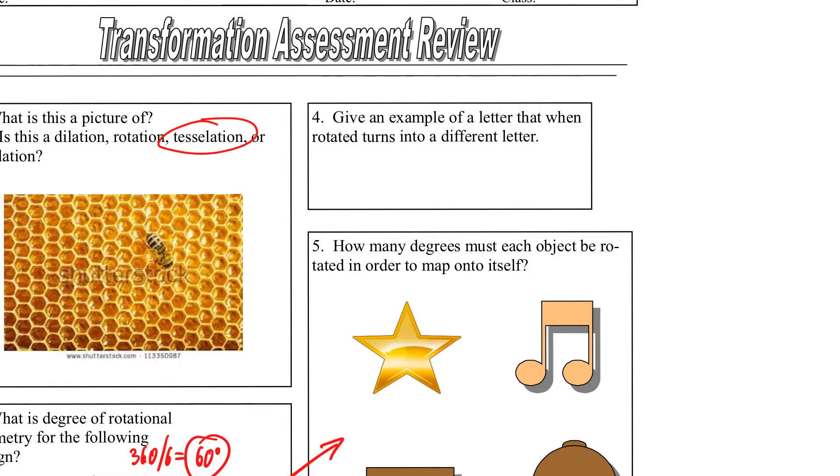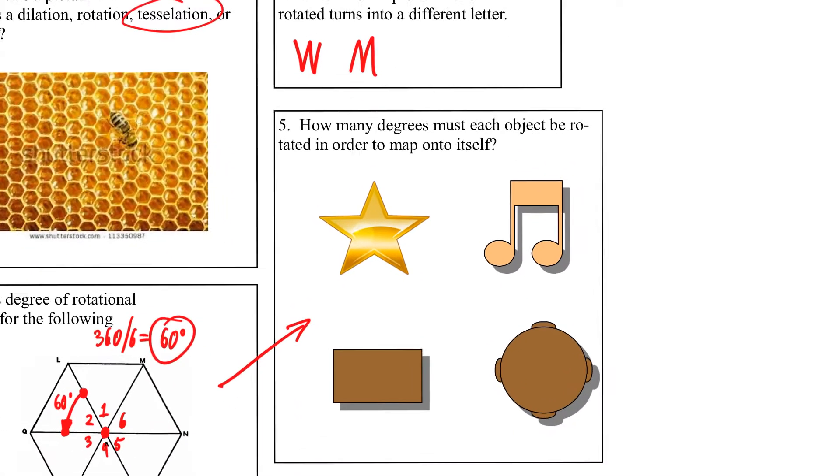Okay, give an example of a letter that when rotated turns into a different letter. M. Okay, good. W and M. All right, if you take an M or a W, whichever one you'll start off with, and rotate it, it turns into the other one. Okay? So that's one example.